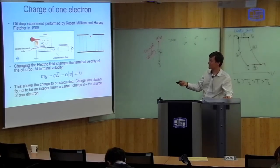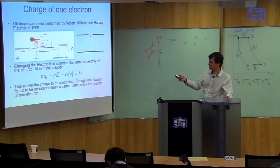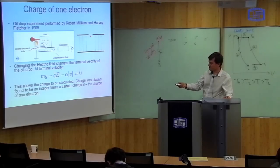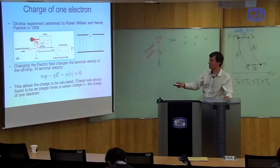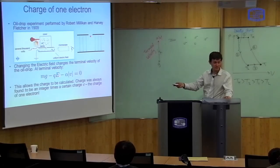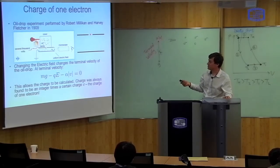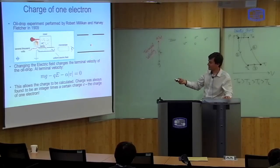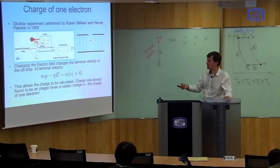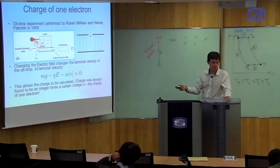In this equation you know everything: you know mg because you measure it as it falls, you know alpha, you know the electric field strength, and therefore you can calculate the charge of the oil droplet Q. So by measuring the difference in speeds — first as it falls under gravity, and secondly as it rises under the influence of an electric field — you can determine the charge on the oil droplet.